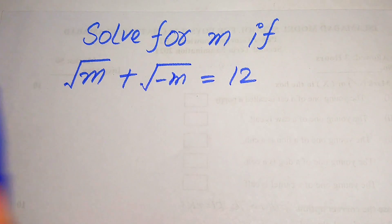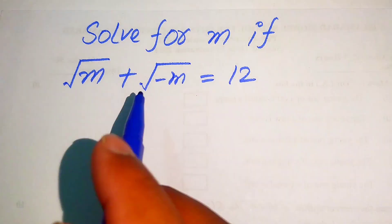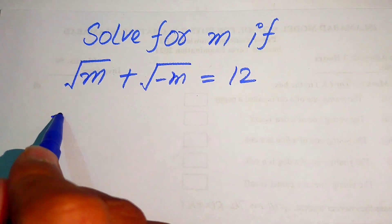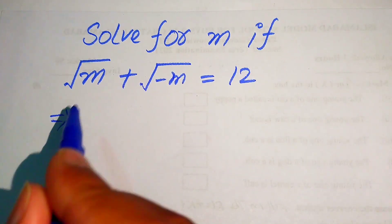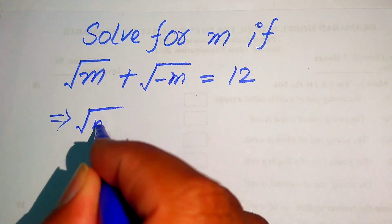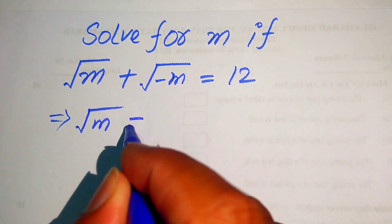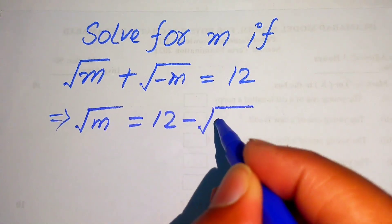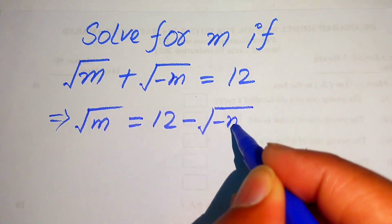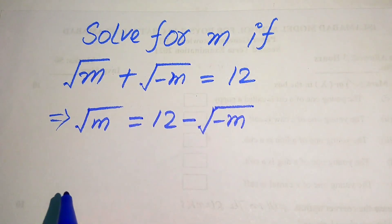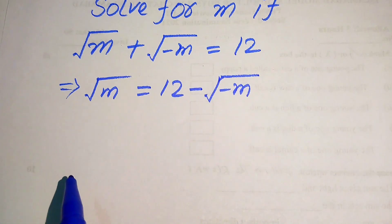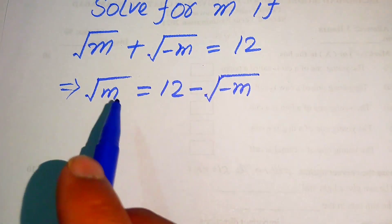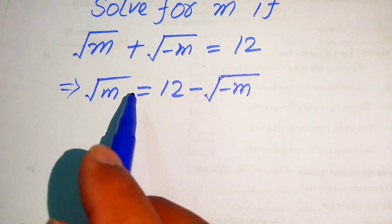The very first step is we need to move the square root of minus m to the right hand side, and it will be written as square root of m equals to 12 minus square root of minus m. So here first we remove both of these radical signs.